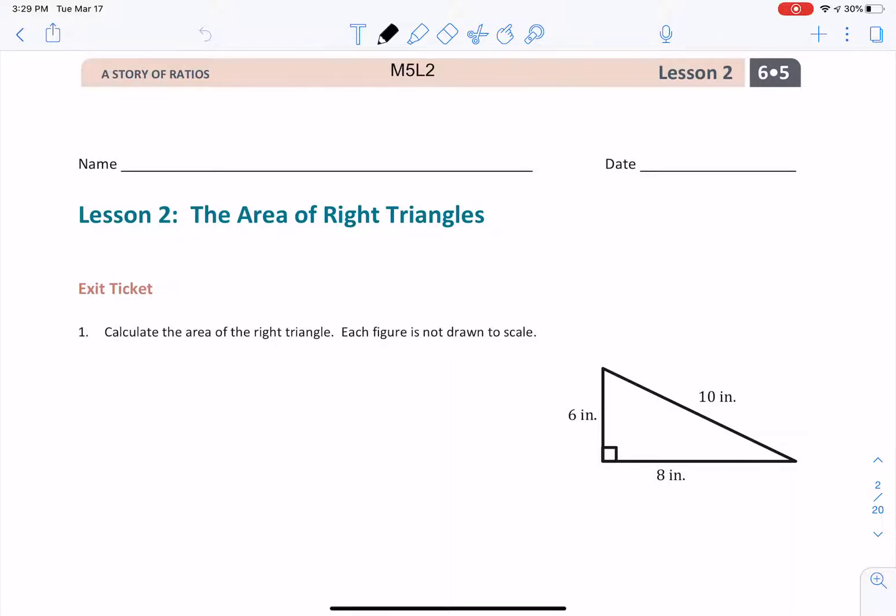Hello, this is Mr. Perez with Module 5, Lesson 2's Exit Ticket, Lesson 2, The Area of Right Triangles.